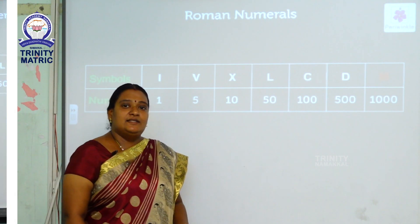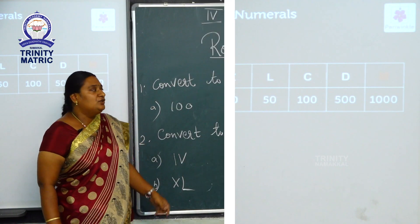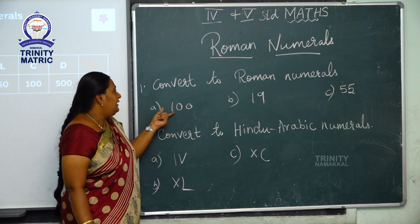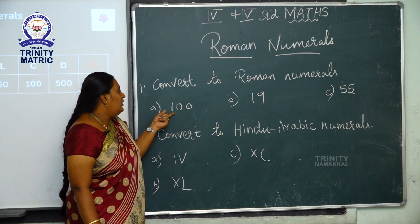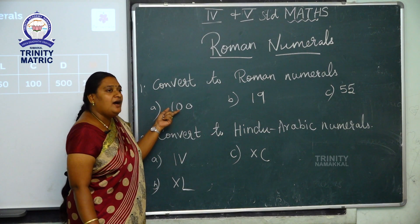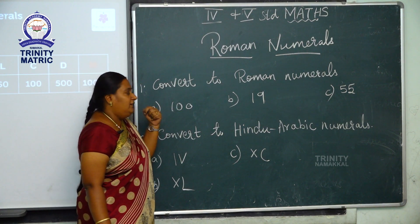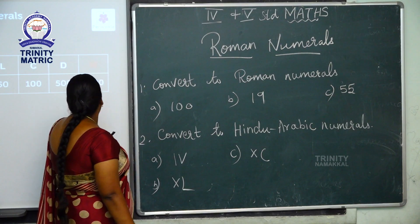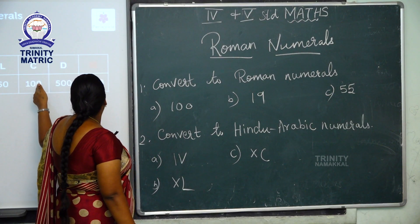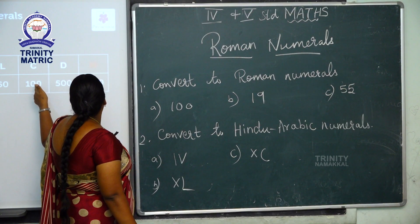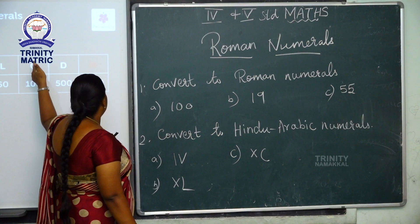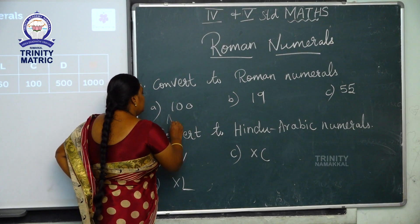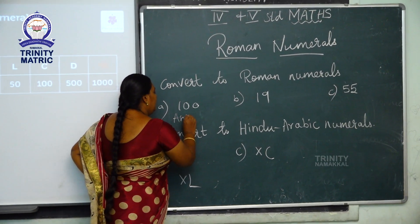Convert to Roman numerals. What is the Roman numeral for 100? See the table. The Roman numeral for 100 is C.